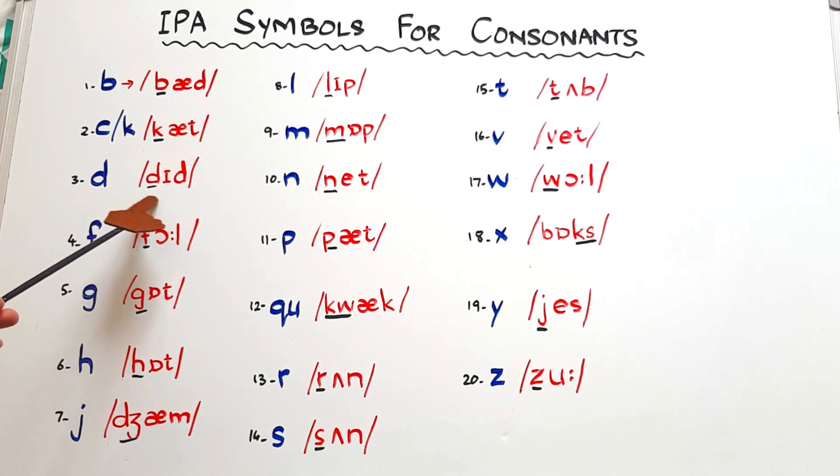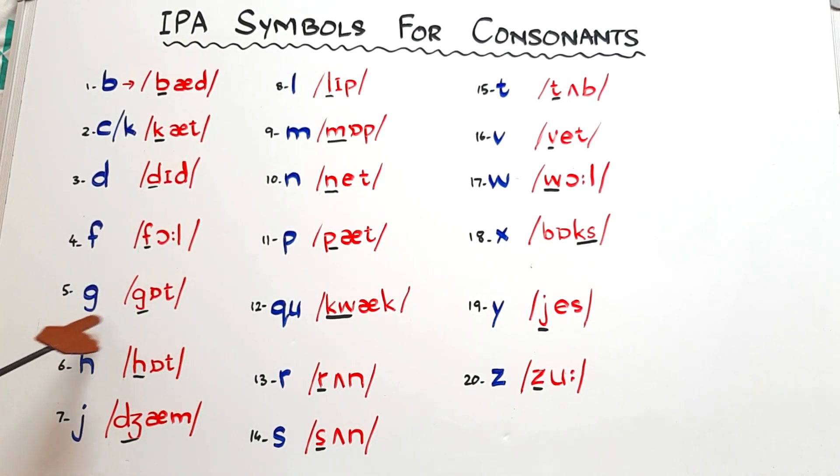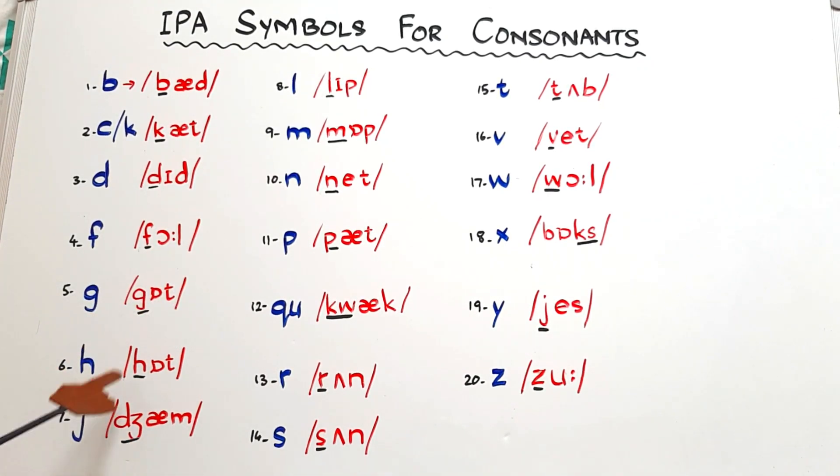For D we have simple D. D-I-D, 'did'. For letter F the symbol is the same. This is F sound and this is the vowel sound. F-O, 'fall'. For G this is G. G-O-T, 'got' - this is the short A sound. Letter H, the symbol is similar to the lowercase H. This is again the short A sound. H-O-T, 'hot'.